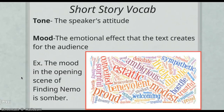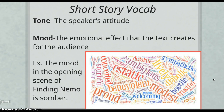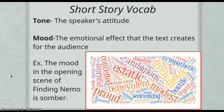Next we have tone and mood, which are combined as one element, but it's important to note they are not interchangeable. Tone is the speaker's attitude, while mood is the emotional effect the text creates for the audience. I have another Taxedo here with tone and mood words — you might pause and try to pick out which words are tone words and which are mood words as good practice. The example is that the mood in the opening scene of Finding Nemo is very somber: that's where Nemo's mother dies, giving you a feeling of sadness.